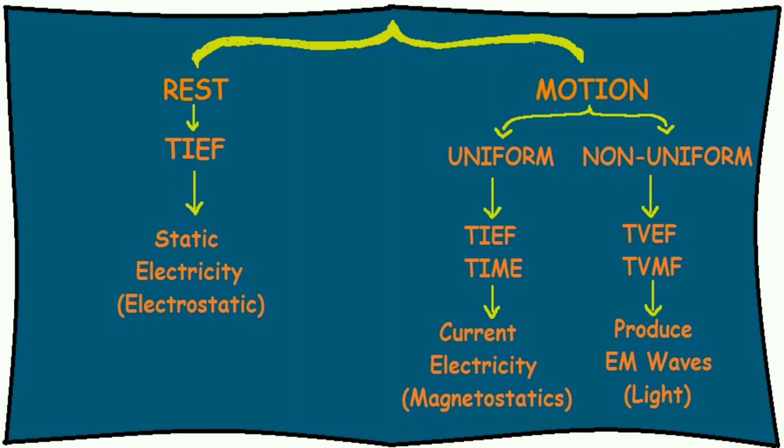The charge can also be non-uniformly moving. When it is so, then it produces time-varying electric field and time-varying magnetic field. When the electric field and magnetic field vary, they produce electromagnetic waves. For example, light is an electromagnetic wave.